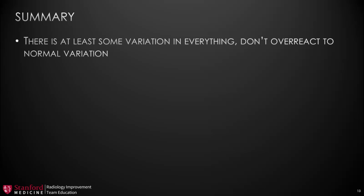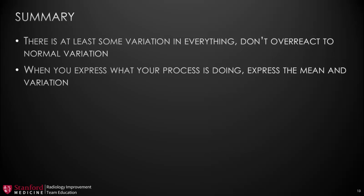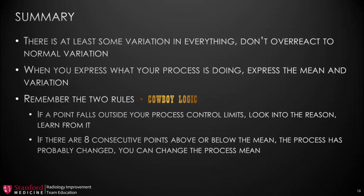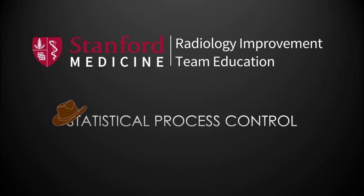In summary, what did we learn today? First, there's at least some variation in everything — don't overreact to normal variation, as that will just tire you out and make you want to quit. Second, when you express what your process is doing, express both the mean and the variation: for example, currently we are at 20 minutes with a variation of plus or minus five minutes. Third, remember the two rules — cowboy logic: if a point falls outside your process control limits, look into the reason and learn from it; and if there are eight consecutive points above or below the mean, the process has probably changed and you can update your process mean. Thanks for your attention today, everyone. This is Jake Mickelson and this is the Radiology Improvement Team Education Program.